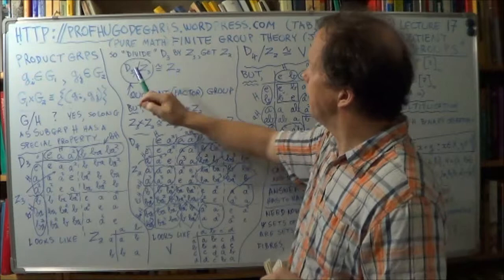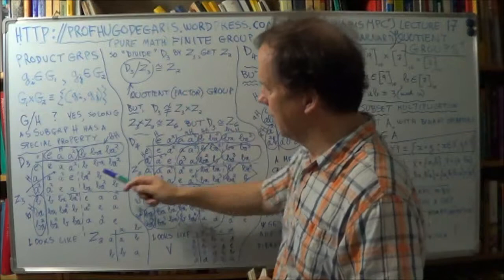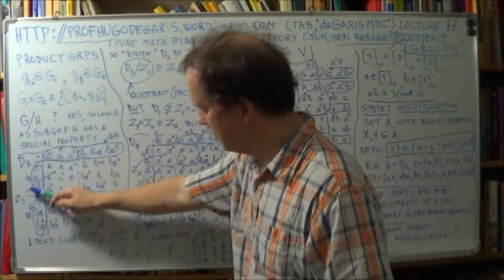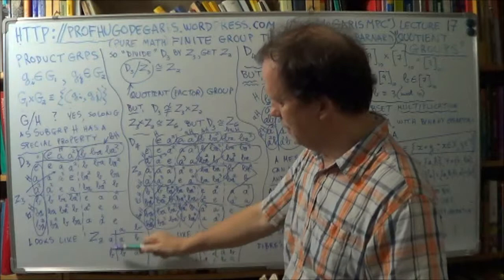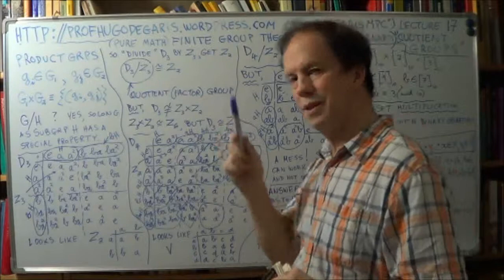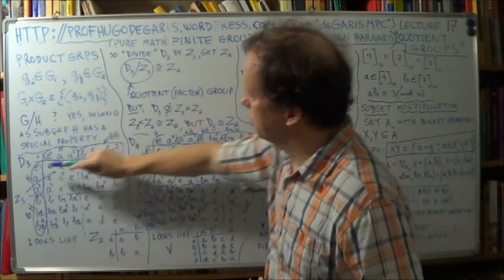And there's only one way it can be. So, in a sense, in a matter of speaking, and I'll make this more explicit as we go along, in a sense, you're dividing this group D3 by this subgroup H, which is Z3.